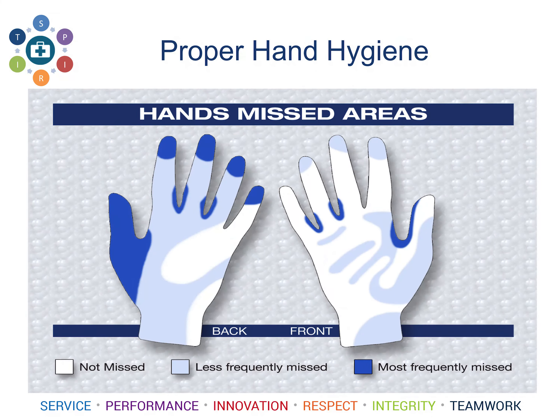When we do hand hygiene, we have to remember that our hands are three-dimensional. We have areas that are consistently missed. Some of those areas are the thumb, the fingers, and in between our fingers as well. Many of us are wearing rings or have jewelry, and be cognizant of the fact that those are areas frequently missed.